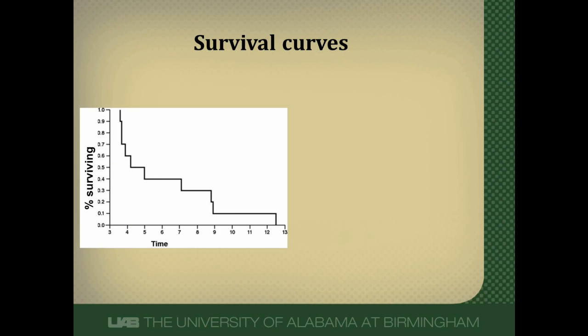Another measure is five-year survival. You determine this by starting at the five-year time point on the x-axis, drawing a line up until it hits the curve, and then across to the y-axis to find what percentage of patients are alive at five years. In this case, it's about 40%.